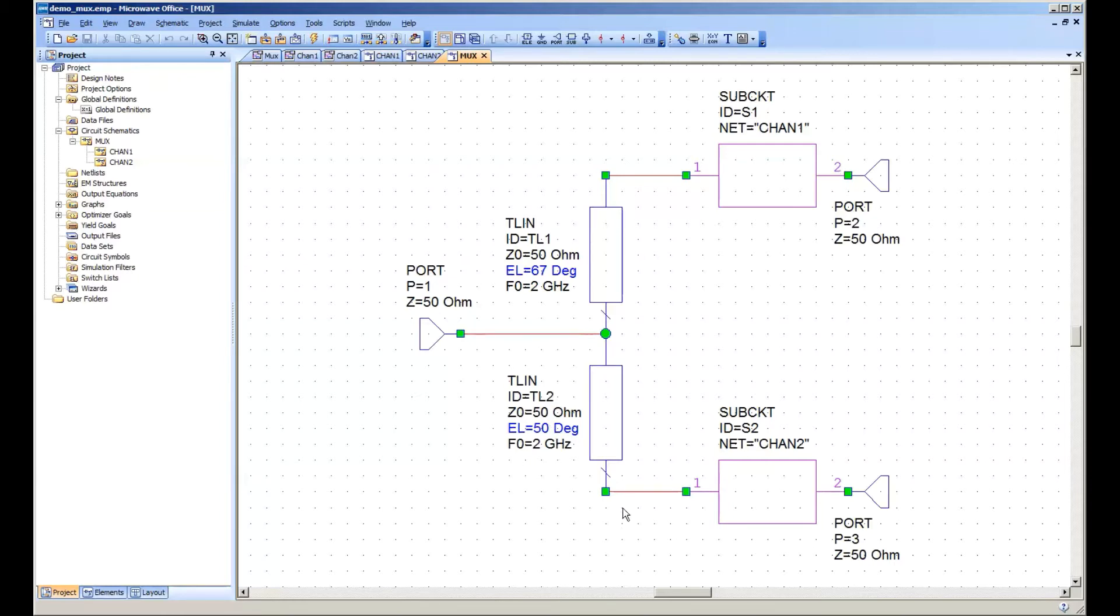So here we have a simple diplexer. We're using the phasing method, the well-known phasing method, where we take our two filter channels and we add a length of line here such that the impedance of this channel is rotated to an open circuit at the common junction in the band center of this channel. And vice versa, we add a length of line here so that the impedance of this filter is rotated to an open circuit at the common junction in the center of the opposite channel.